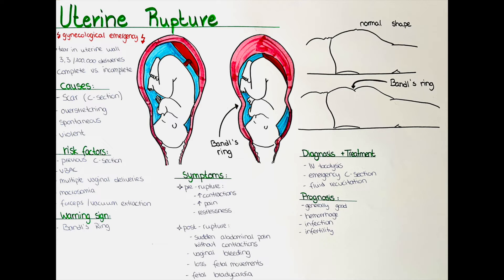The lower segment of the uterus, which is thinner, becomes stretched and even more thinned out. This can eventually lead to uterine rupture.